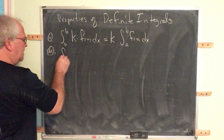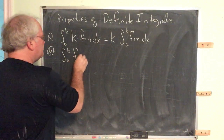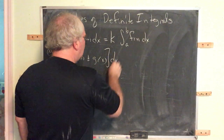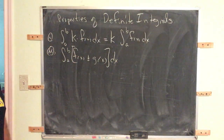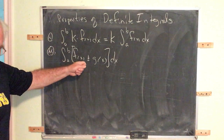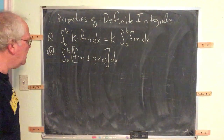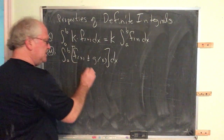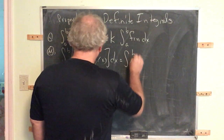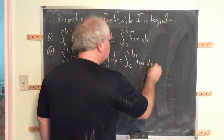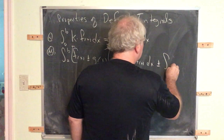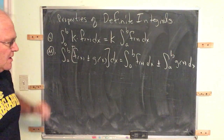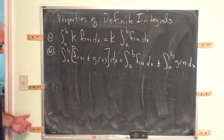The second property is the integral of the sum. The integral of the sum is the sum of the integrals. The limit of a sum is the sum of the limits, and since this is a limit of a Riemann sum, we have inherited that property: the integral of the sum is the sum of the integrals.